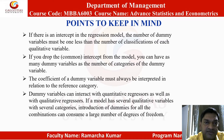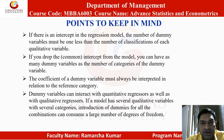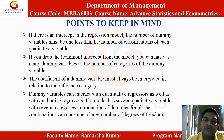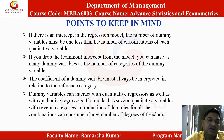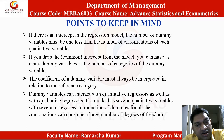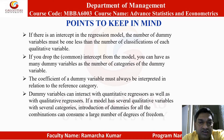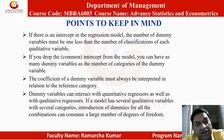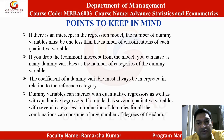Points to keep in mind. If there is an intercept in the regression model, the number of dummy variables must be one less than the number of classifications of each qualitative variable. If you drop the common intercept from the model, you can have as many dummy variables as the number of categories. The coefficient of a dummy variable must always be interpreted in relation to the reference category. Dummy variables can interact with quantitative regressors as well as with qualitative regressors. If a model has several qualitative variables with several categories, introduction of dummies for all combinations can consume a large number of degrees of freedom.